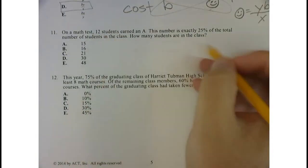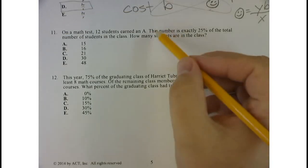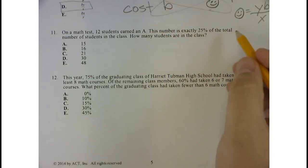On a math test, 12 students earn an A. This number is exactly 25% of the total number of students. How many students are in the class?